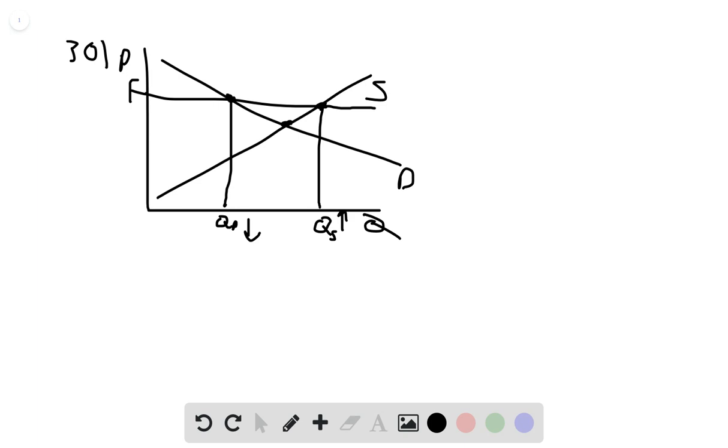And logically, this makes sense because if you think about what a price floor is, which is saying you cannot charge less than this amount. And let's say it's put on apples and apples normally sell for $2. And the government comes in and says, you can't sell apples for anything less than $3 each.